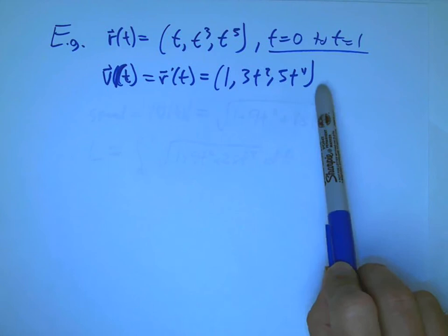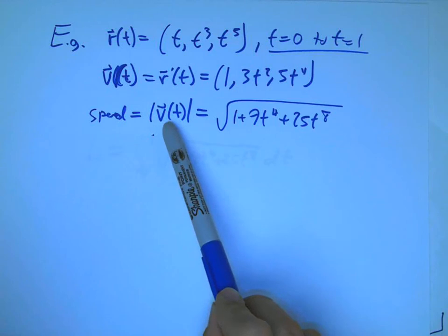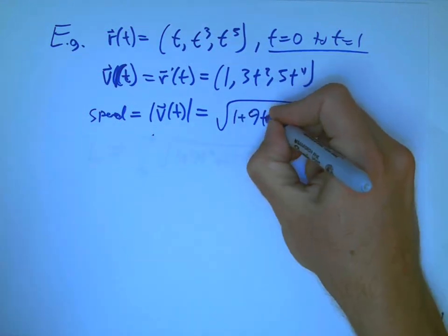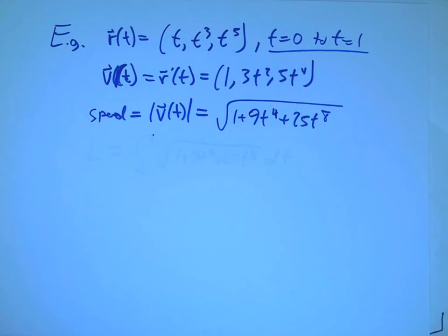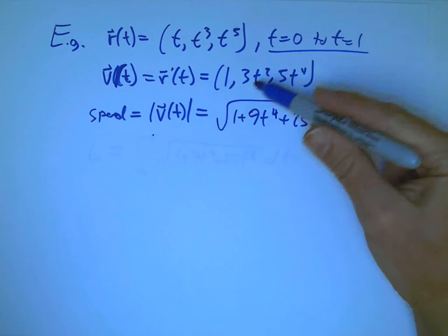Well, the first two steps are easy. The velocity is equal to the derivative of position is equal to this stuff. Okay, so far so good. The speed, magnitude of that, and I take the square root of the sum of the squares. So far so good.